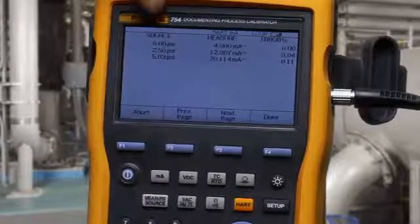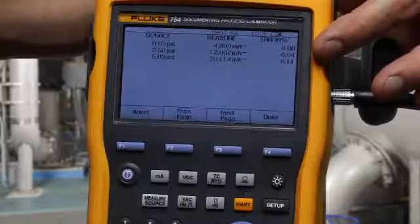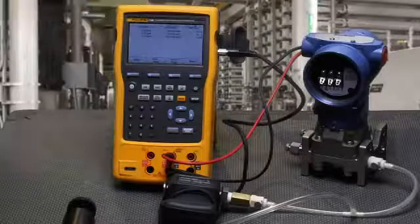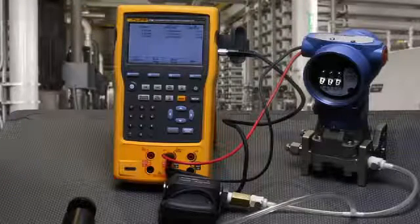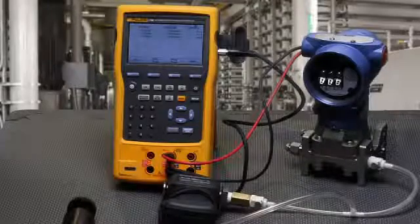You see the applied pressure measured milliamp. And in this case, all the errors are less than 0.25% and the test passes. And that is how you calibrate a Rosemount 3051 Heart Smart Pressure Transmitter using the Fluke 754 Documenting Heart Process Calibrator.